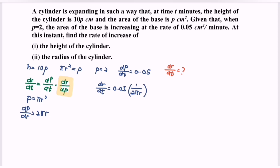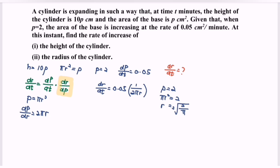Based on the given situation, p is equal to 2. When p equals 2, substitute into pi r squared equals p: pi r squared equals 2, so r is equal to the square root of 2 over pi. Substituting r into the expression: dr/dt is equal to 0.05 over 2 pi times the square root of 2 over pi.